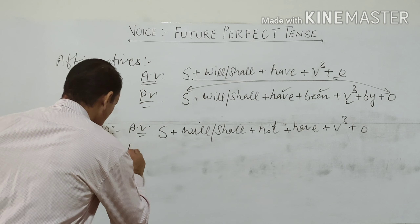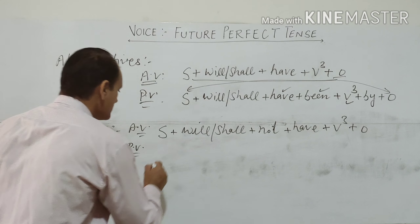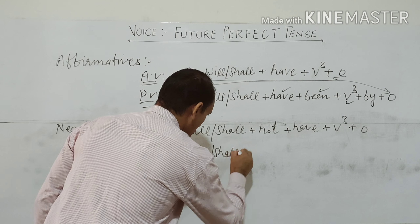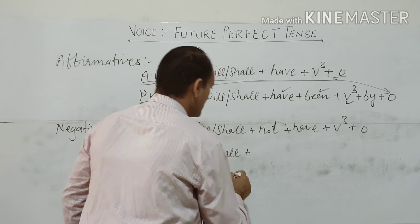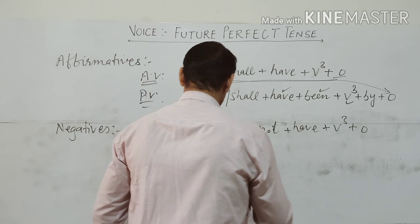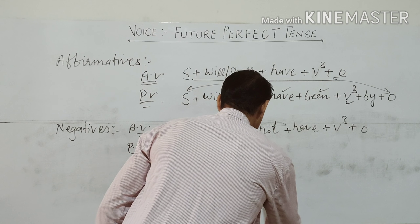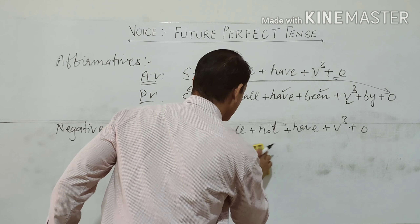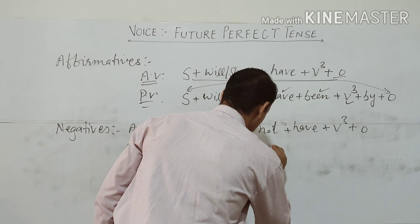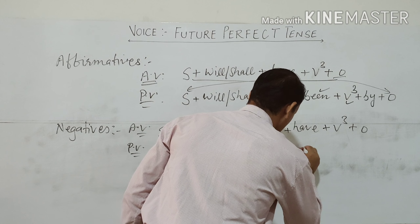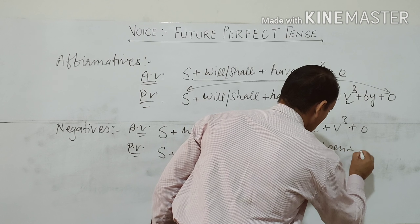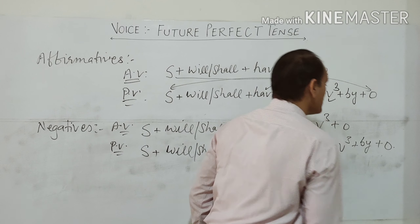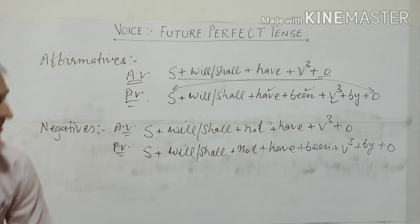When we change the negative into passive voice, it becomes: subject followed by will or shall, then not first and then have — so will/shall + not + have — followed by being, then the third form of the verb, then by, and then the object.